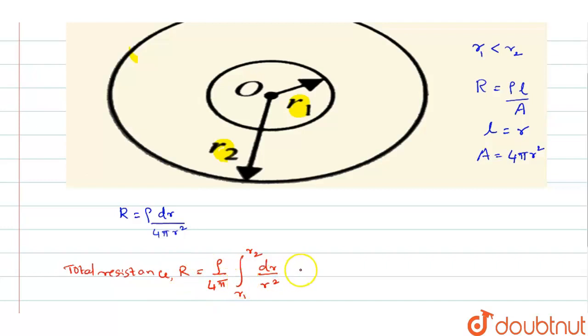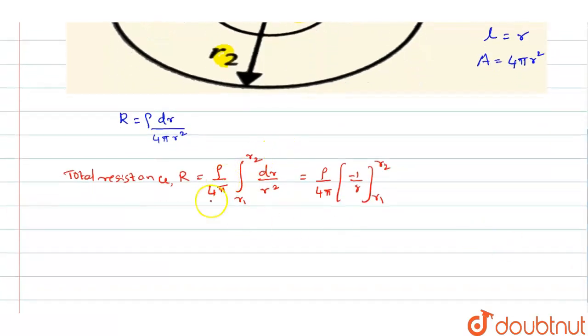Now, here when you simplify this, this gives you rho by 4 pi into minus 1 by R into R1 to R2. Now, in this situation, you can further simplify this.